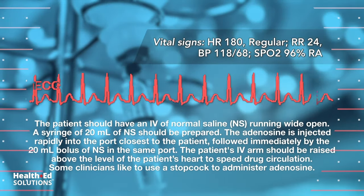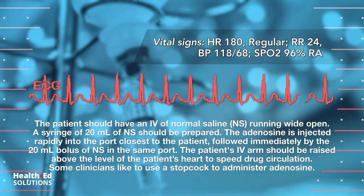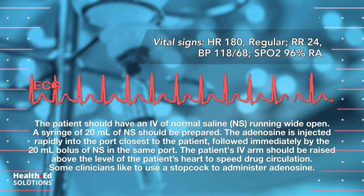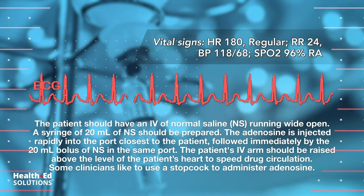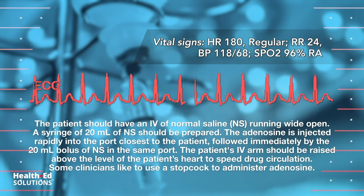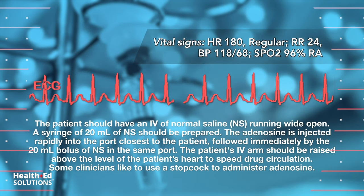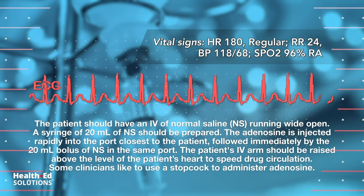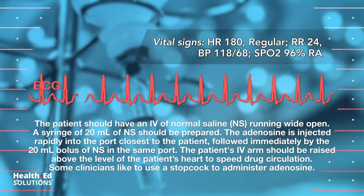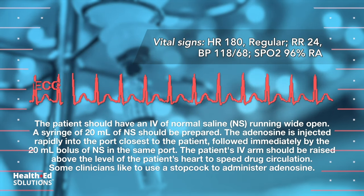The patient should have an IV of normal saline running wide open. A syringe of 20 milliliters of NS should be prepared. The adenosine is injected rapidly into the port closest to the patient, followed immediately by the 20 milliliter bolus of NS in the same port. The patient's IV arm should be raised above the level of the patient's heart to speed drug circulation. Some clinicians like to use a stopcock to administer adenosine.